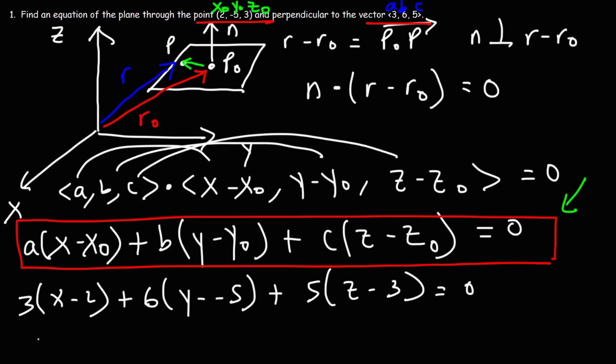So now we need to distribute. This is going to be 3X minus 6. This becomes Y plus 5 times 6, that's going to be 6Y plus 30. And then plus 5Z minus 15, which equals 0.